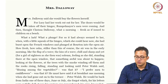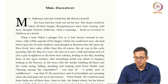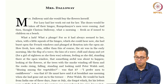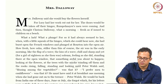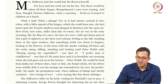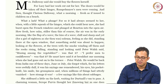'How fresh, how calm, stiller than this of course — the air in her early morning, like the flap of a wave, the kiss of a wave, chill and sharp, and yet for a girl of eighteen as she then was, solemn, feeling as she did, standing there at the open window, that something awful was about to happen.' Looking at the flowers, at the trees, and the rooks rising, falling, standing — and looking at Peter Walsh, who said, musing about vegetables: 'I prefer men to cauliflowers.' He must have said that at breakfast one morning when she had gone out to the terrace. Peter Walsh — he would be back from India one of these days, June or July, she forgot which, for his letters were awfully dull. It was his sayings one remembered, his eyes, his pocket knife, his smile, his grumpiness — and when millions of things had utterly vanished, how strange it was: a few sayings like this about cabbages.